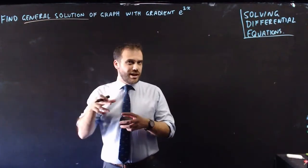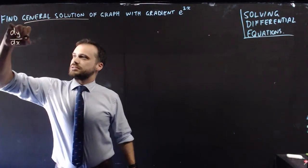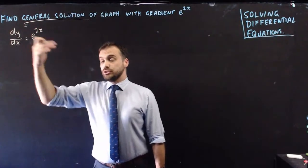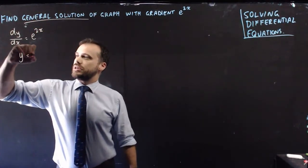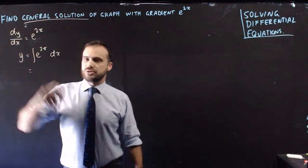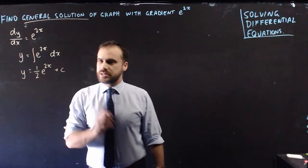So if a graph has a gradient of e^(2x), that means that the derivative dy/dx equals e^(2x), which means that our solution to this differential equation is going to be y equals the integral of e^(2x) with respect to x. Now that's y equals (1/2)e^(2x) plus c.